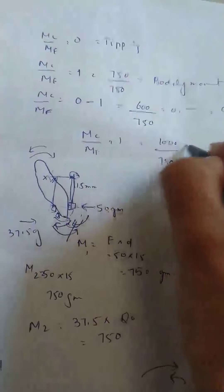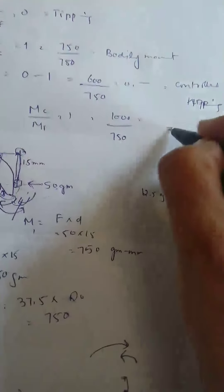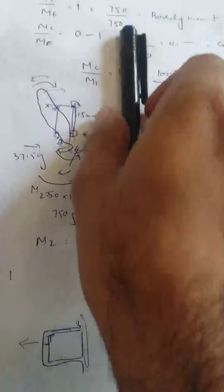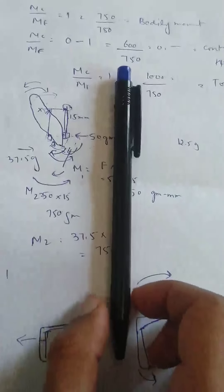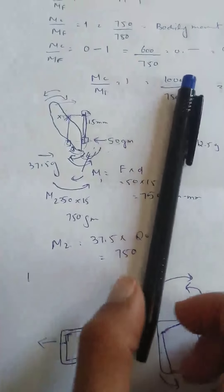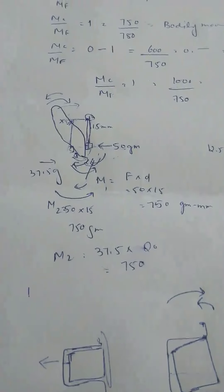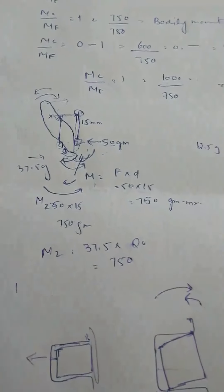When MC over MF is greater than 1, the torque is more than the force, meaning the counter torque exceeds the initial moment. In this case, the root moves more than the crown — this is root movement. When MC over MF equals exactly 1, the torque fully cancels the moment, the tooth moves bodily, which is pure bodily movement.